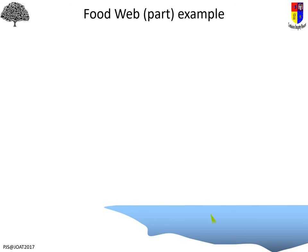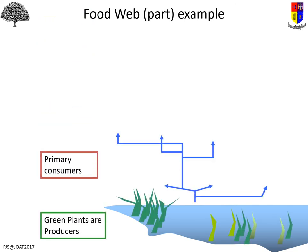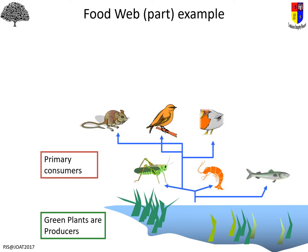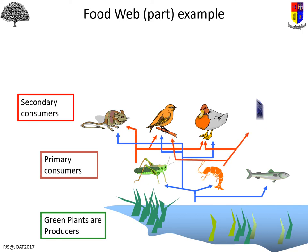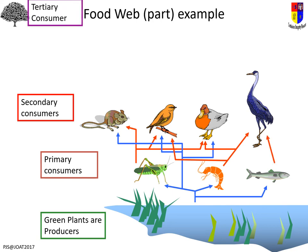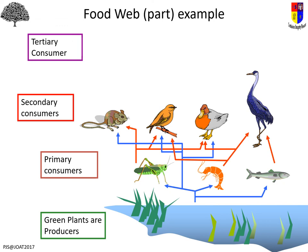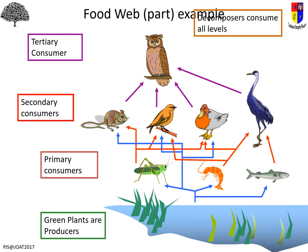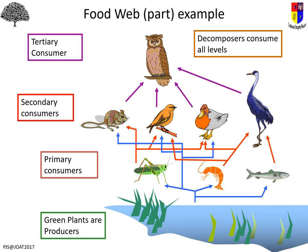As an example food web: you start with green plants, then a whole pile of primary consumers feeding on the plants — whether that's seeds, leaves, or other parts. Then secondary consumers come in, but you'll notice some primary consumers are also secondary consumers depending on which food chain you trace to reach them. Tertiary consumers are at the top in this example. And at every single level, decomposers are consuming any waste or dead material produced by any of those organisms.